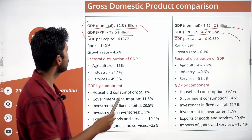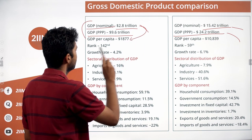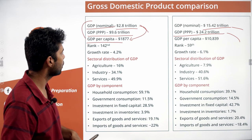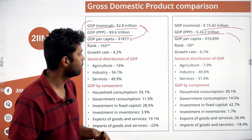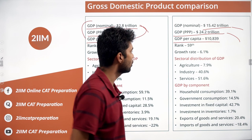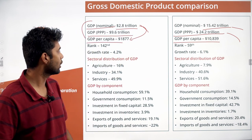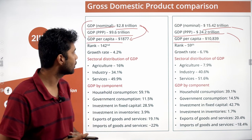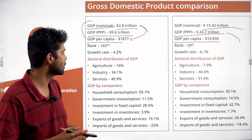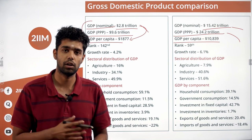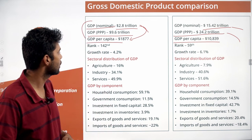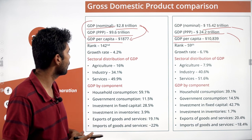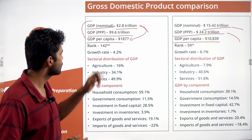GDP per capita — nominal GDP divided by population — is $1,877 for India and $10,839 for China. That's more than a five-times difference, largely because China has developed its manufacturing capabilities and service industry very highly and exports quite a lot. India is ranked 142nd in GDP per capita while China is ranked 59th.